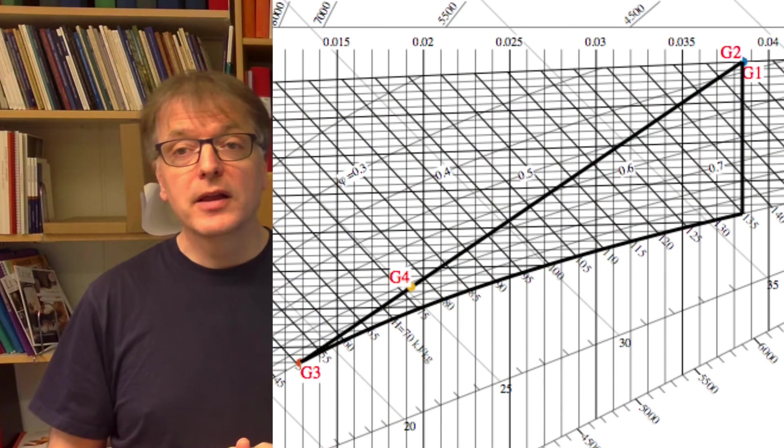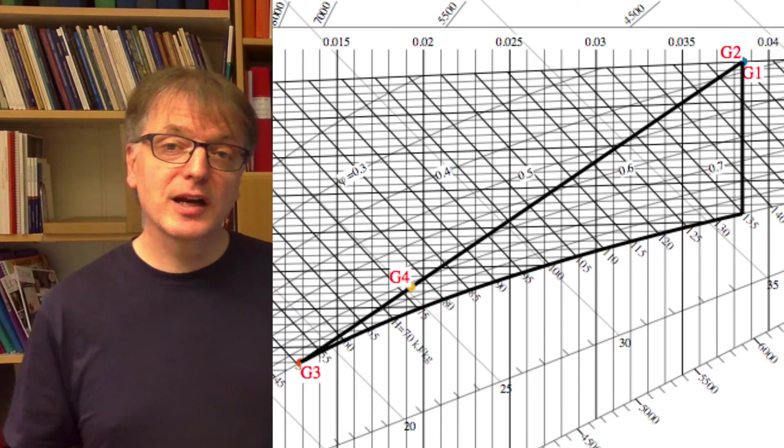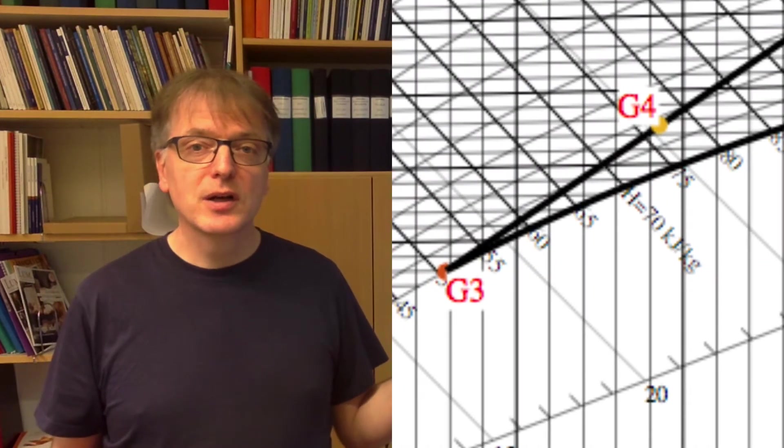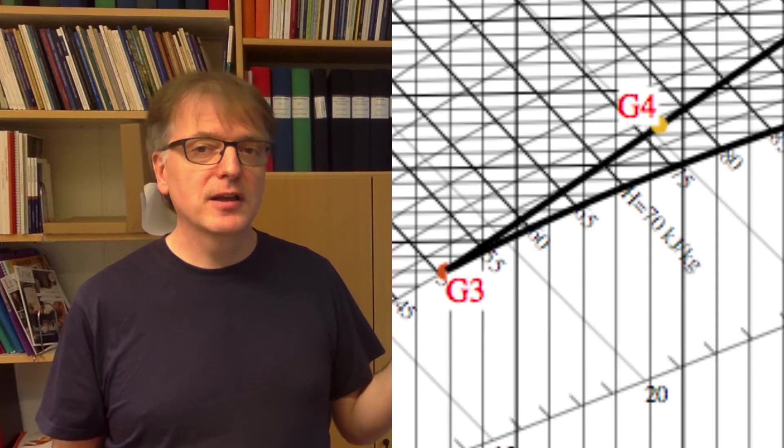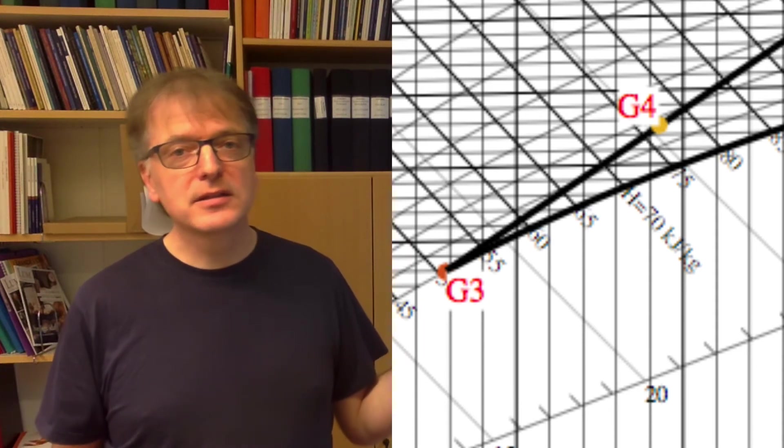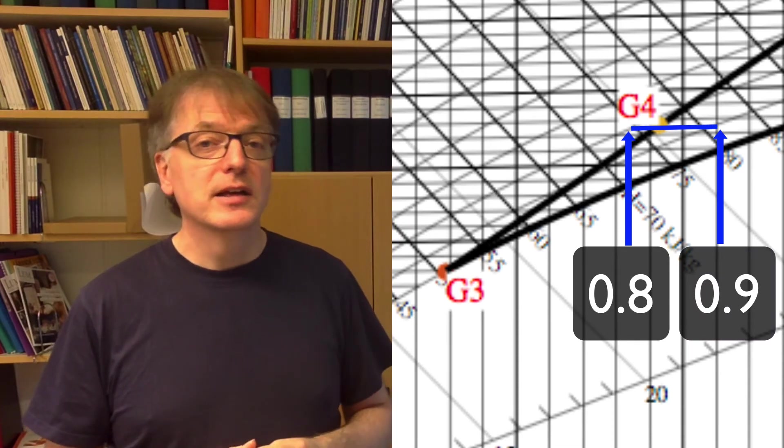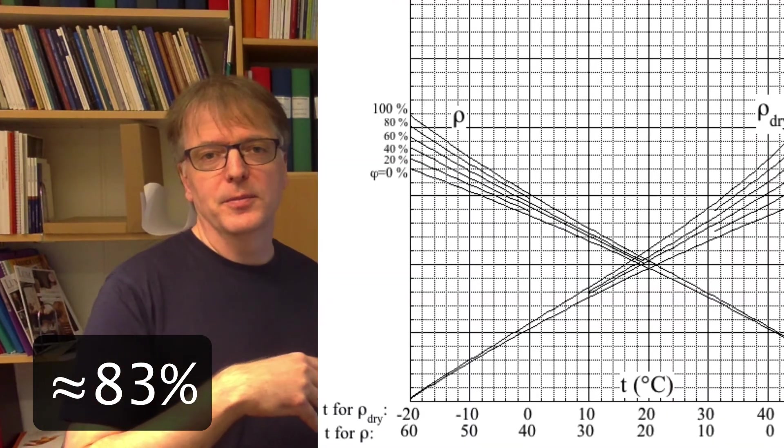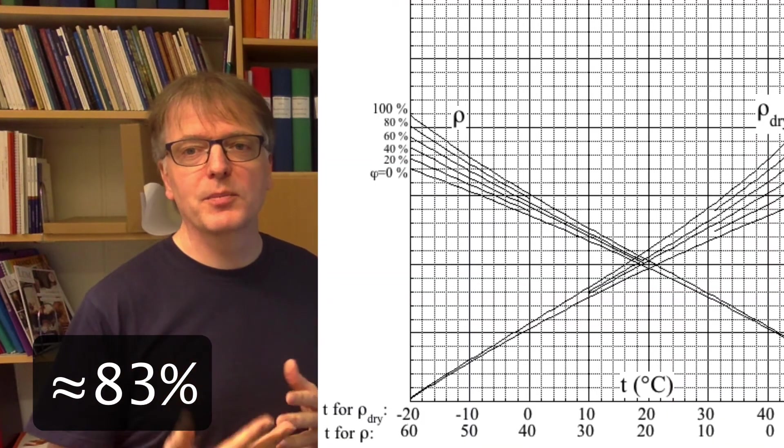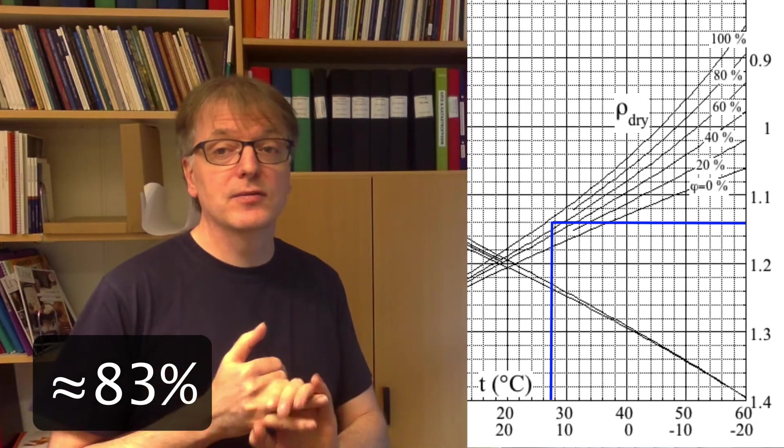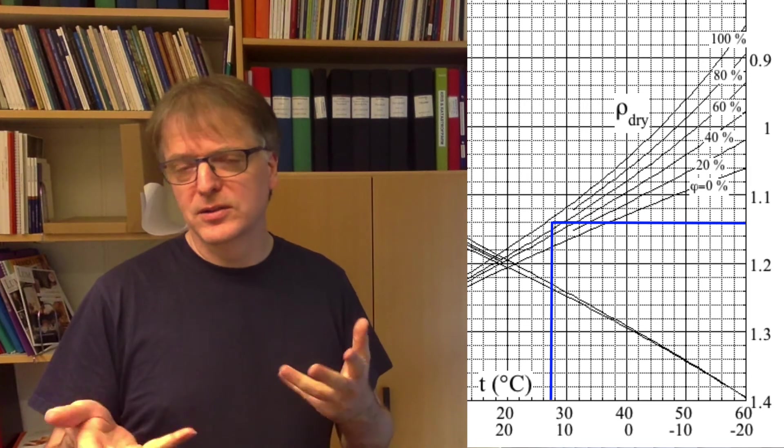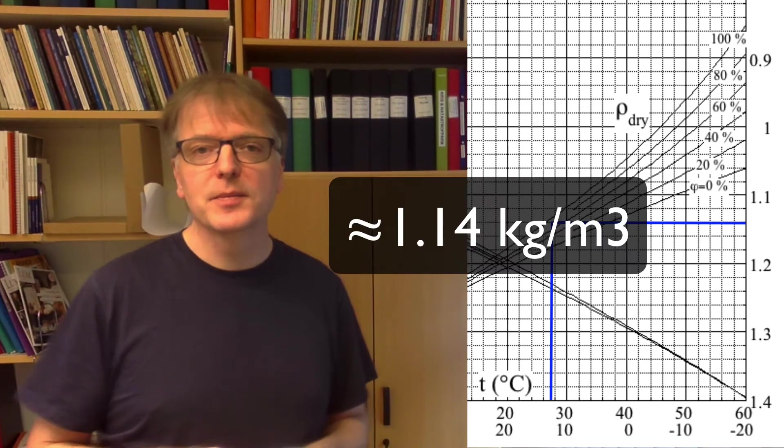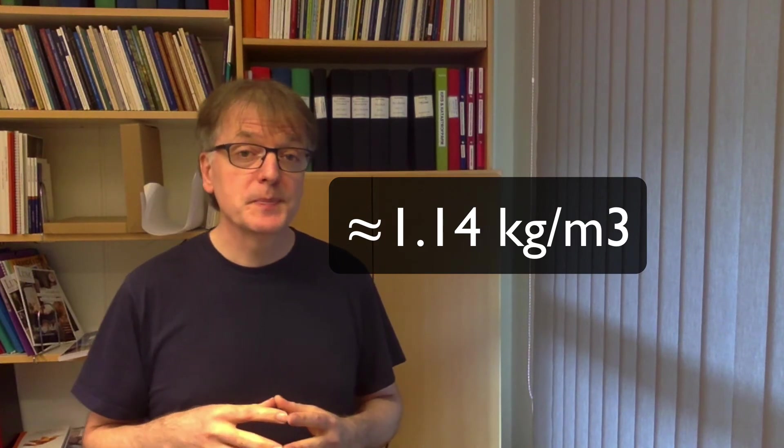Now I also said that g4 is not 4 cubic meters per second. So let's check what it is. Once again, we look in the diagram and see where is our g4 point. Well, it has humidity that is larger than 0.8, so larger than 80% and less than 90%, about 83, I would say. And then you take the density diagram again, and now the temperature is 27.5 degrees and the relative humidity is 83%, and you should get something like 1.14 kilograms of dry air per cubic meter.